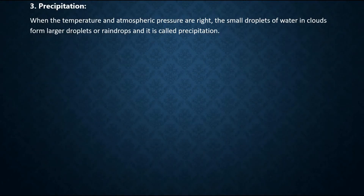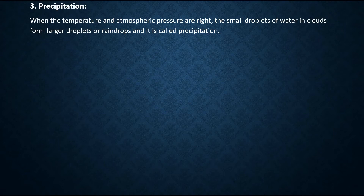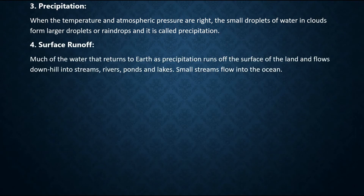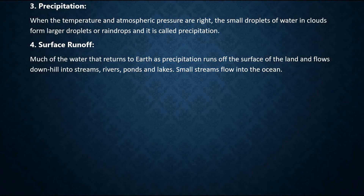Three, precipitation — when the temperature and atmospheric pressure are right, the small droplets of water in clouds form larger droplets or raindrops; this is called precipitation. Four, surface runoff — much of the water that returns to earth as precipitation runs off the surface of the land and flows downhill into streams, rivers, ponds and lakes. Small streams flow into the ocean.